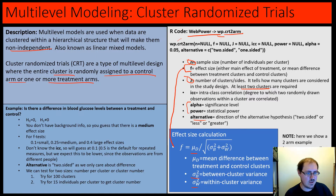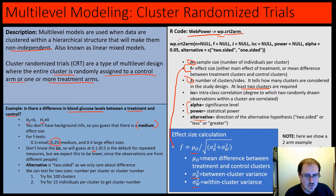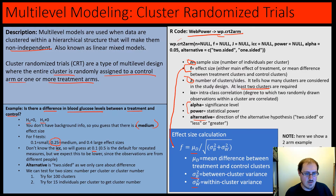We're not going to need to calculate effect size ourselves yet. The question is: is there a difference in blood glucose levels between a treatment and a control? The null is there is no difference. Let's use a medium effect size — that's 0.25 for an F test. We don't know the ICC, so let's guess it at 0.1. 0.5 would be the default for repeated measures, but we expect this to be low because these observations are from different people. We'll use two-sided since we just care about the difference.